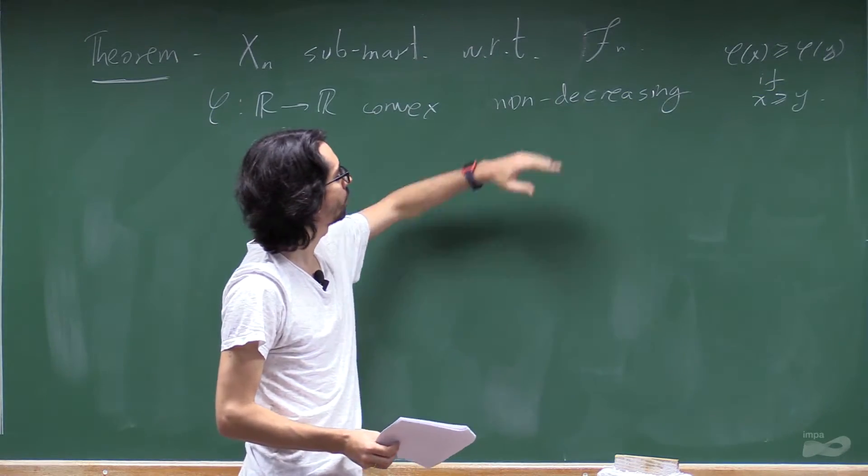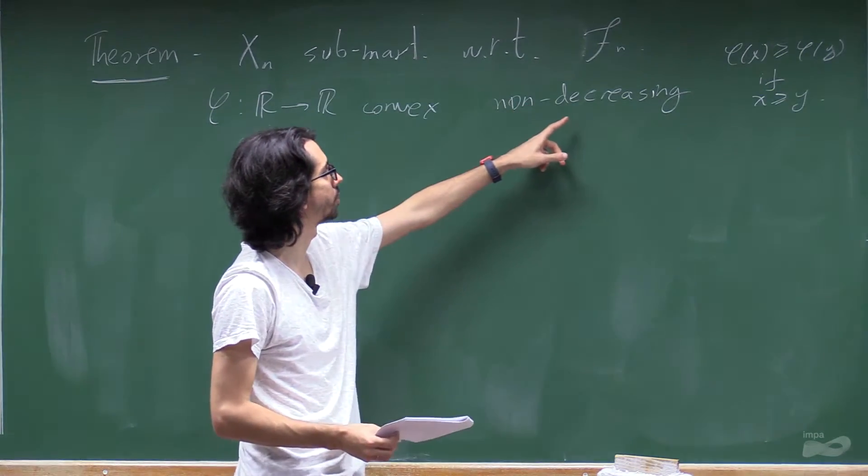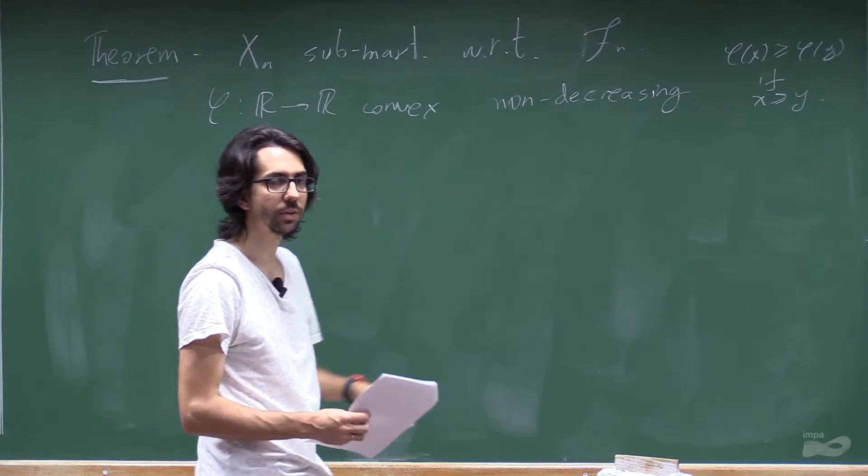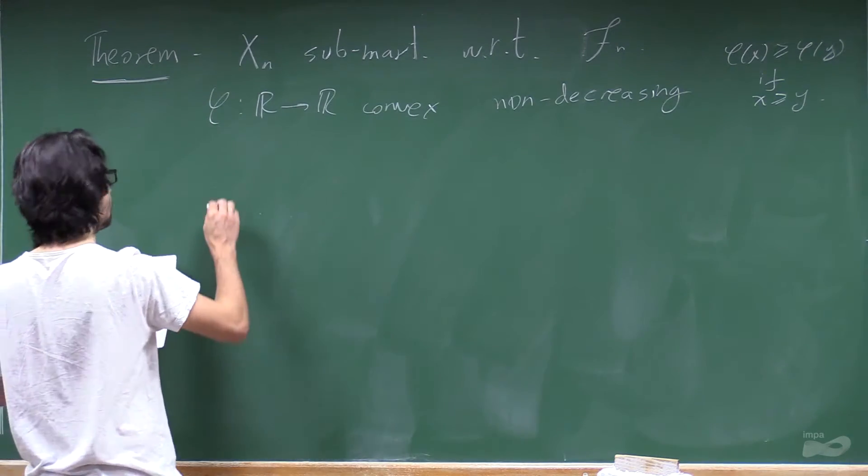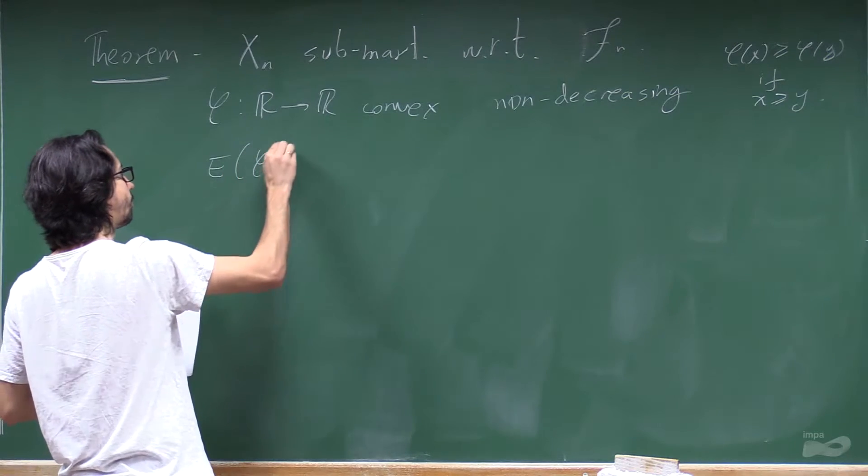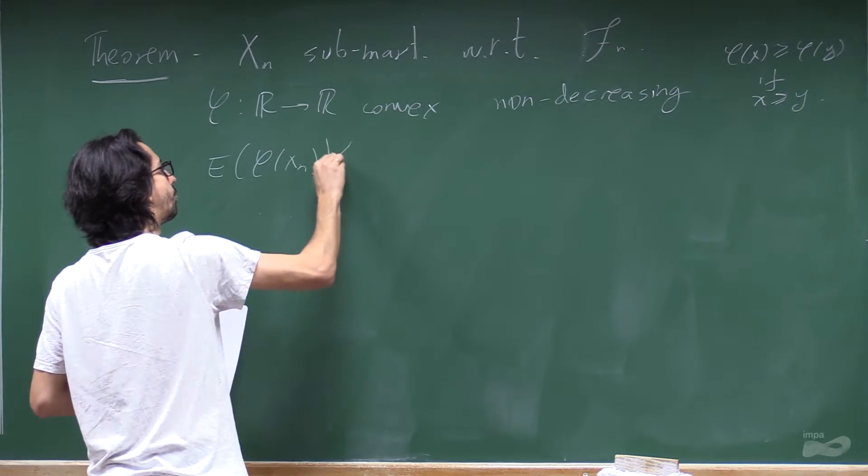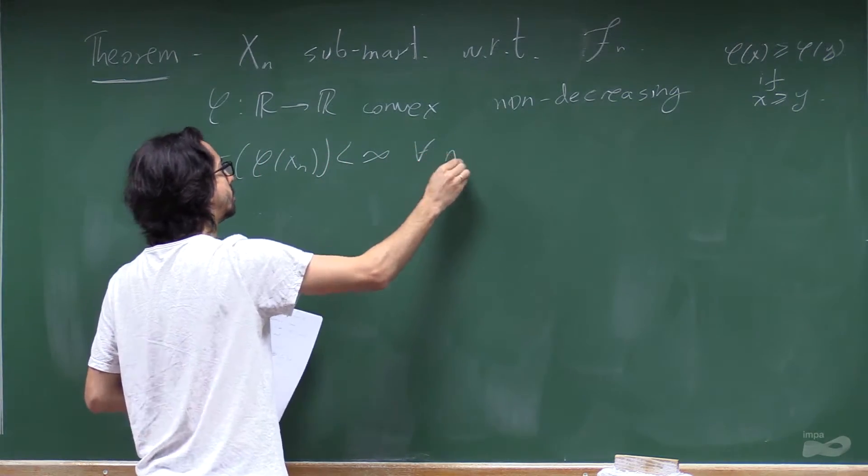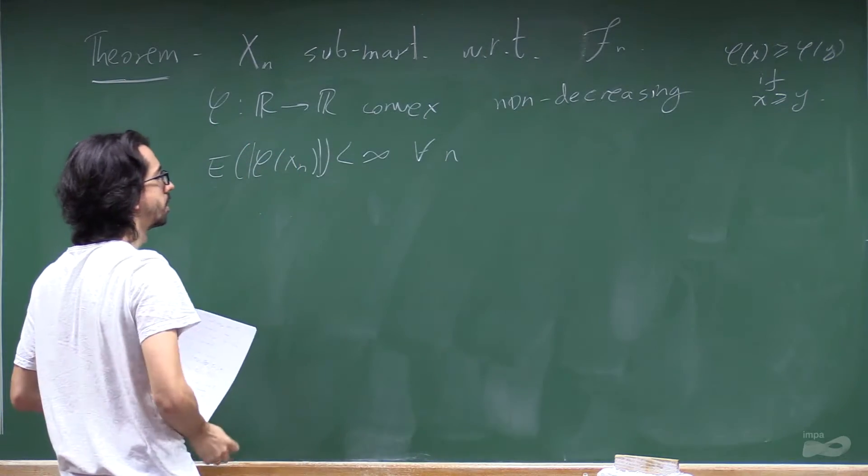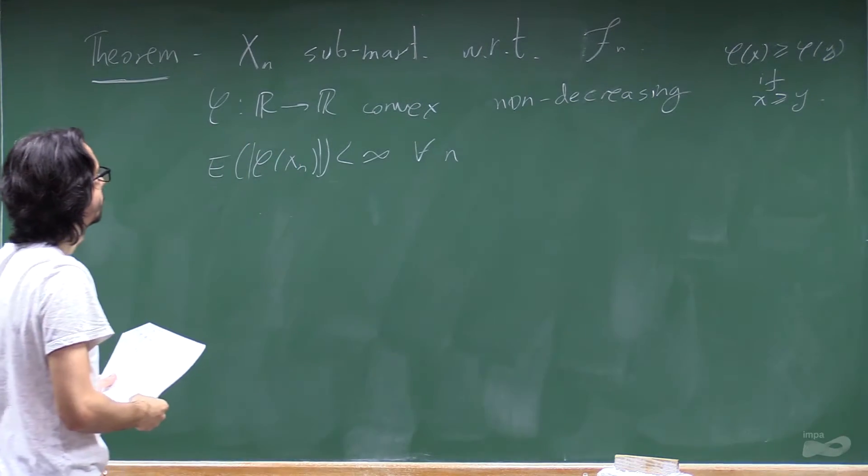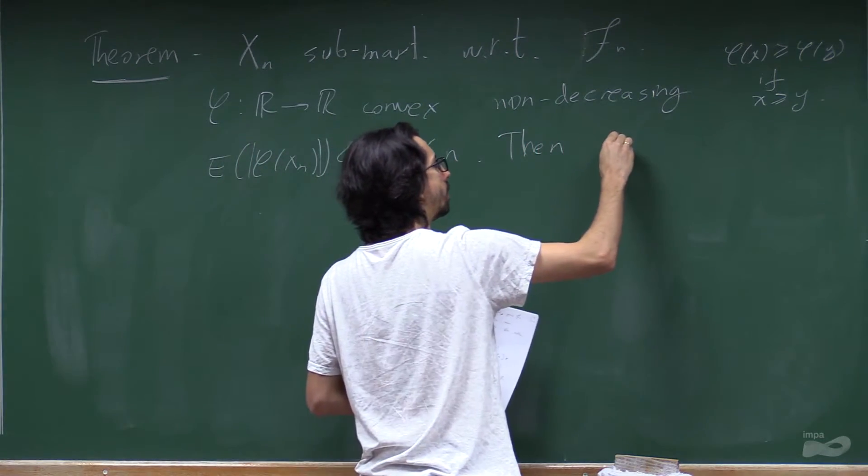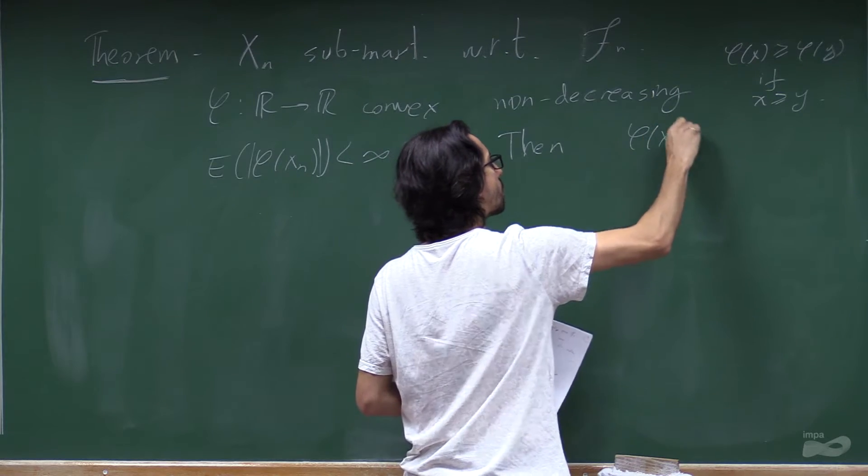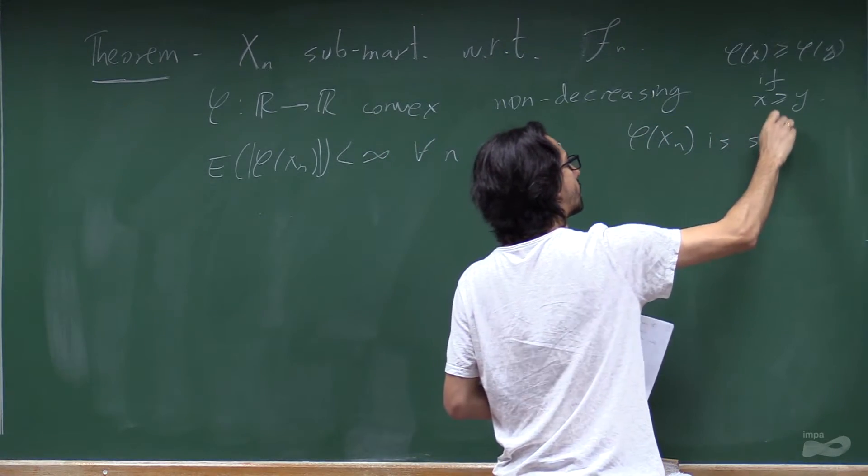This term is terrible because a non-decreasing function is not a function that is not decreasing. But anyway. And that the expectation of phi of xn is finite for every n, just like we needed in the previous theorem. Then phi of xn is a sub-martingale.